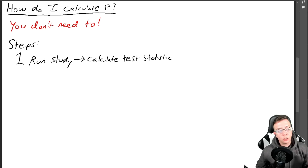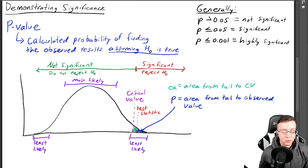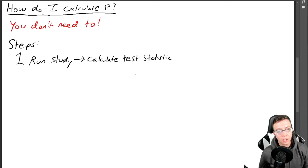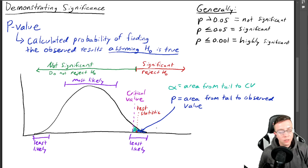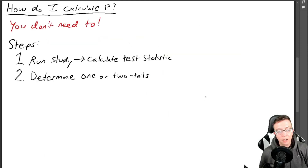Step one: you need to run the study and calculate the test statistic, which is the measured or observed average. That gives us the dark blue area boundary. Then you need to determine if you are going to run a one-tail or a two-tail test — whether you put all your eggs in one basket on one side or split the difference. Generally speaking, a two-tailed test is deemed more credible than a one-tailed test because it is a smaller area you are trying to achieve.